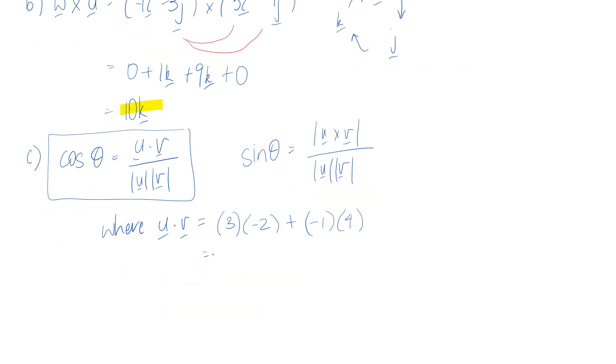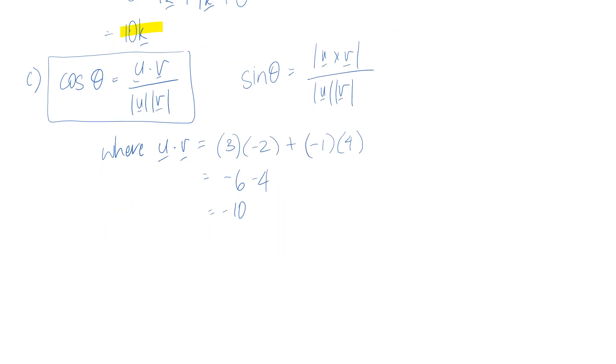So if we simplify this down we're going to get negative 6 minus 4 which is negative 10. So now I might just compute each of these magnitudes and then we can sub it all in a moment.